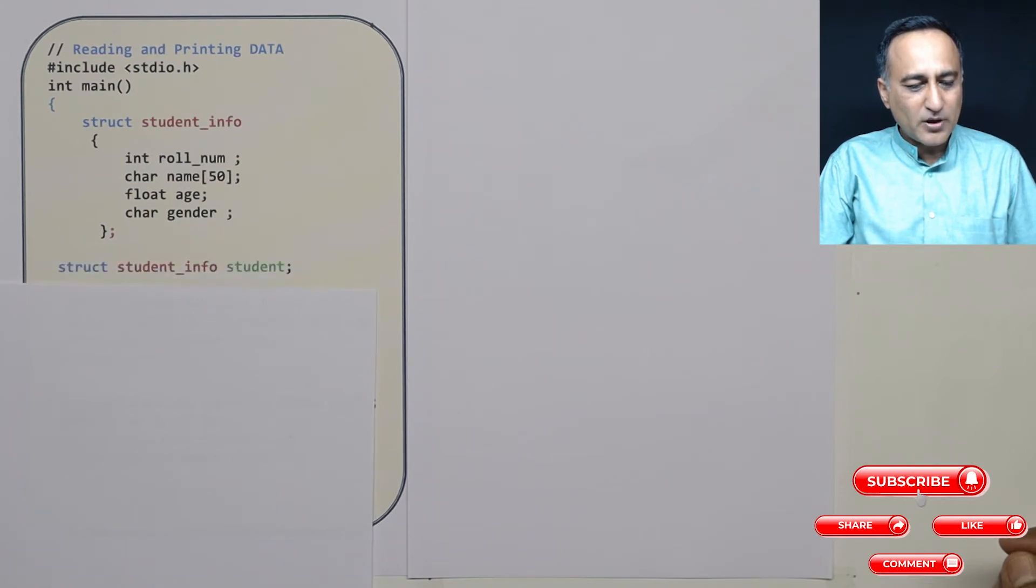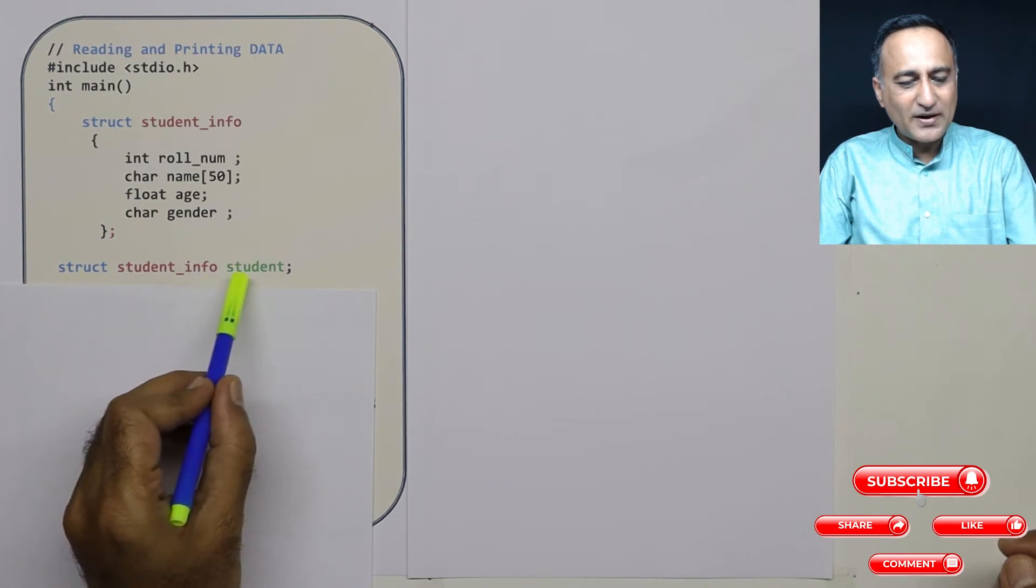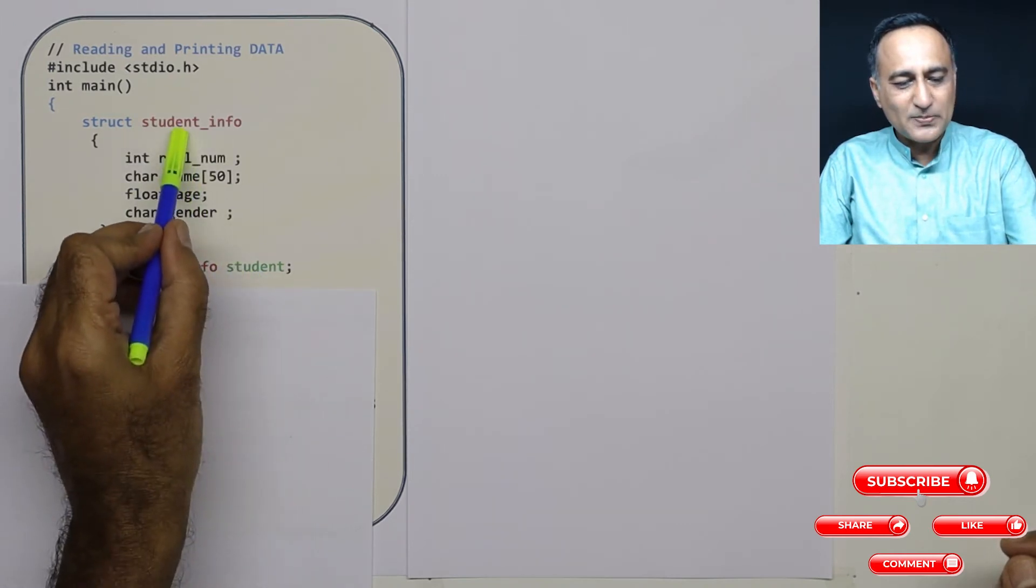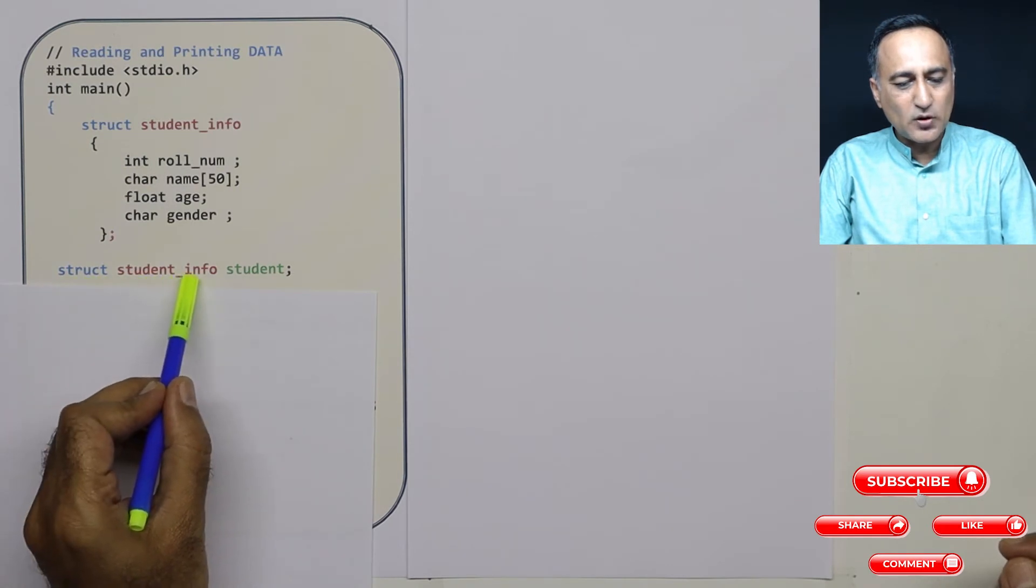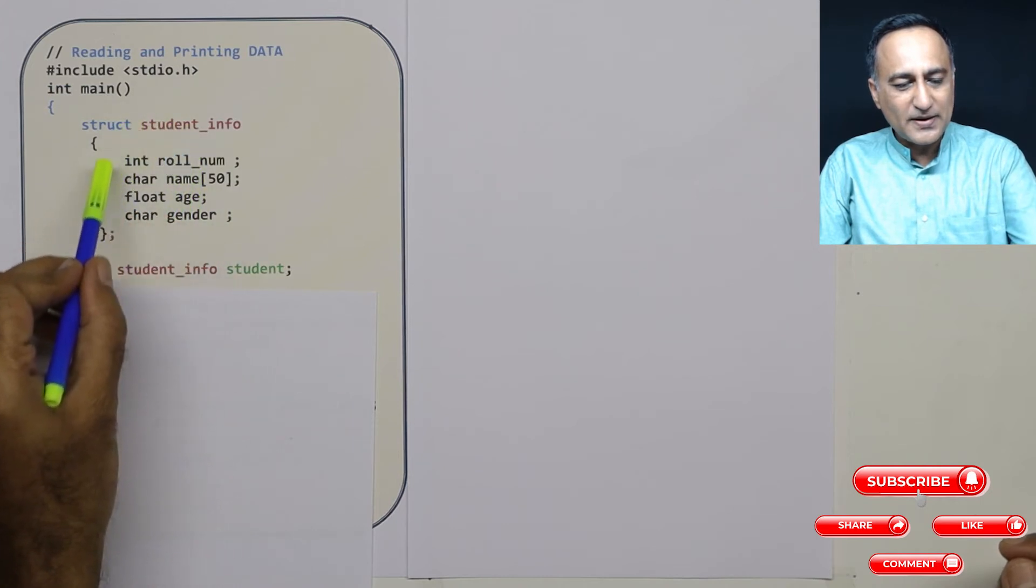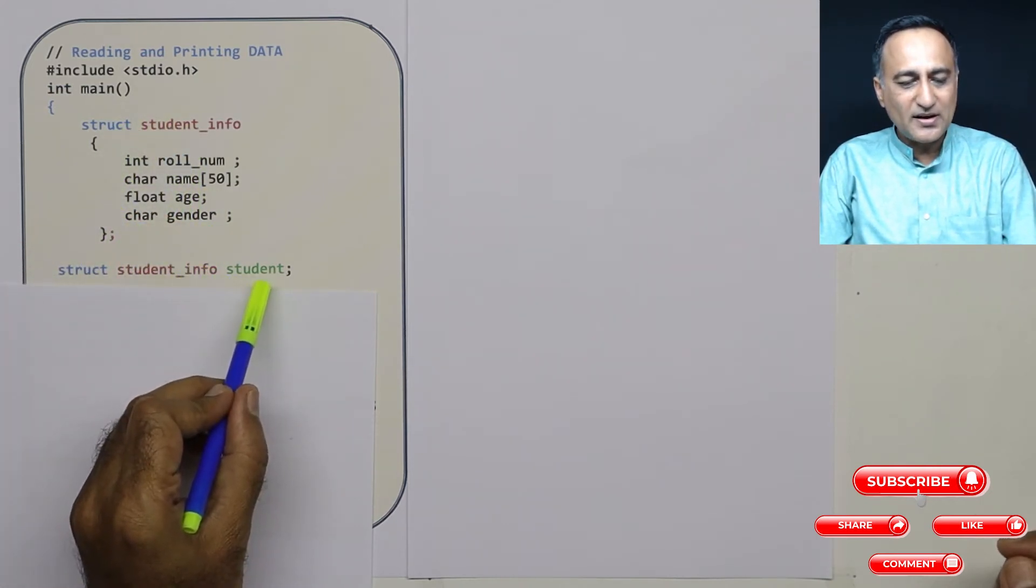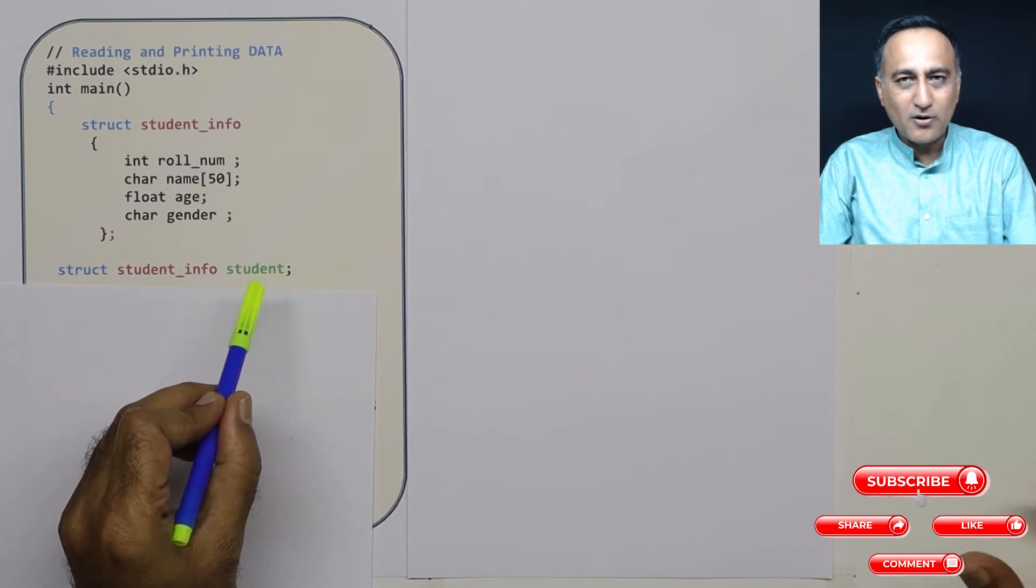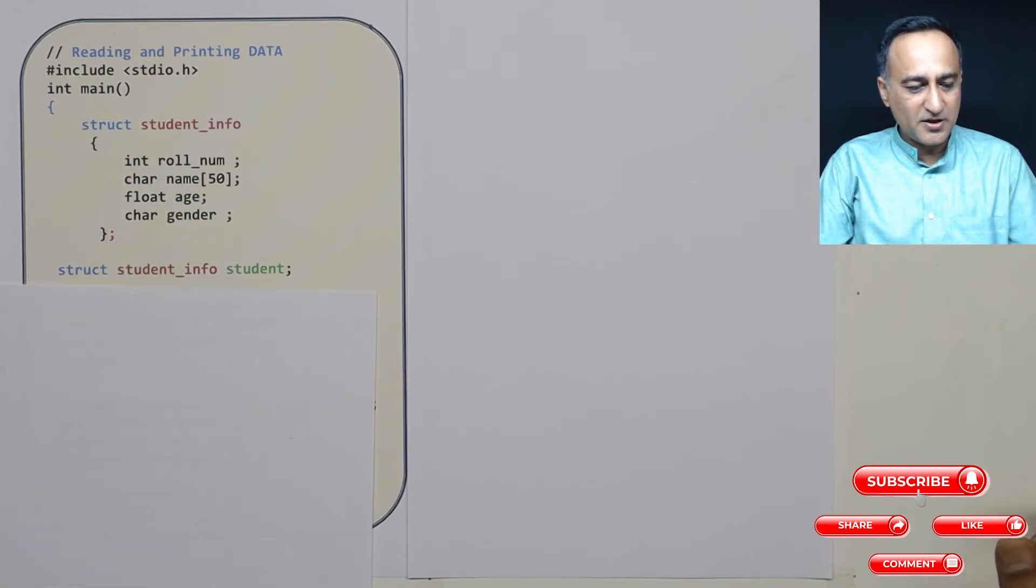Now the next step is the syntax of creating a variable of this particular type. When I say struct student_info student, a variable of this particular type will be created. What it means is student is going to be a block of memory where it's going to be able to store roll number, name, age and gender.